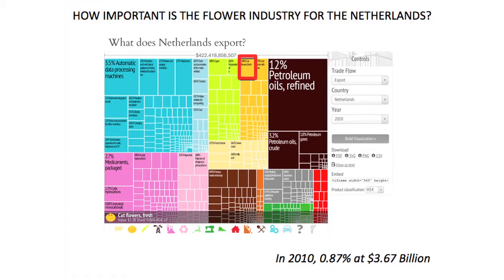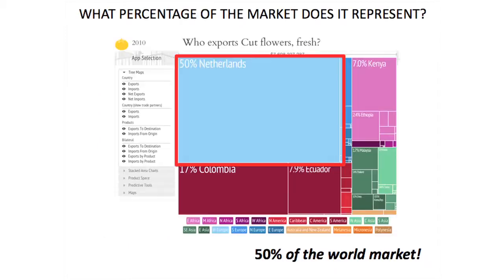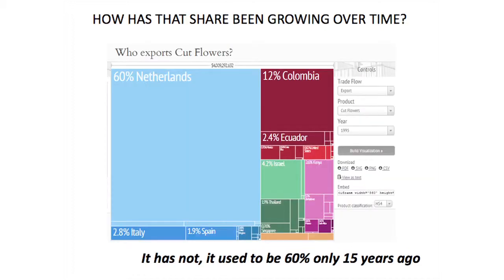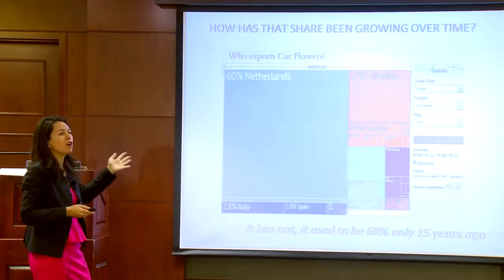How big is those $3 to $4 billion in world markets? The Netherlands has 50% of the world market in flower exports. But has that been increasing through time? Actually, it hasn't. Only 15 years ago — and these are all things you can see in the online atlas — it was 60%.